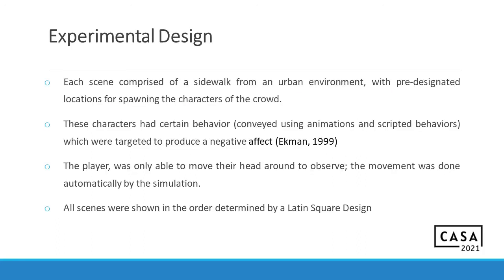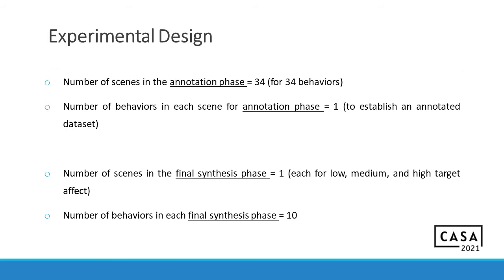Let us talk about our experimental design. First of all, this remained the same throughout all the phases of the project. Basically, a scene that comprised of a sidewalk from an urban environment. And we had some predetermined locations for spawning the characters in the crowd. And each of these characters had a certain behavior. And they were conveyed using animations and scripted behaviors. And basically, we wanted them to produce a negative effect in the mind of the player. The player was only able to move their head around to observe. The camera would be moving automatically. They wouldn't have to put any input. And all the scenes were shown in an order determined by a Latin square design. So, to sum it all up. We have 34 scenes in the annotation phase. And each annotation phase had just one behavior. So, we had to establish our dataset. Number of scenes in the final synthesis phase would be one for three targeted levels that we had decided to go for. And each of these would have exactly 10 behaviors.